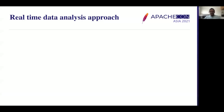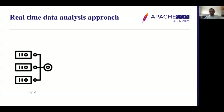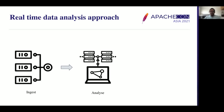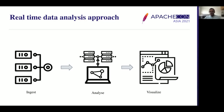First, the data needs to be transformed and ingested from the source to any of the analytical platforms. Based on the capability, there could be multiple analytical platforms — for example, for batch there will be one platform, for streaming there will be another. Once the data is loaded, there will be other apps like reporting tools and BI tools which consume this data.